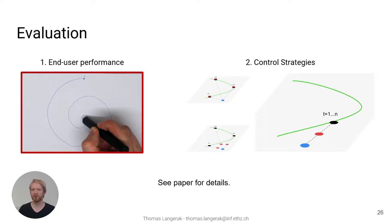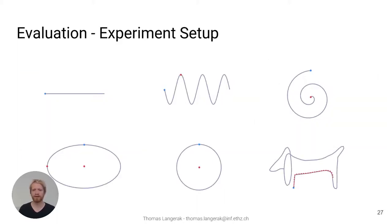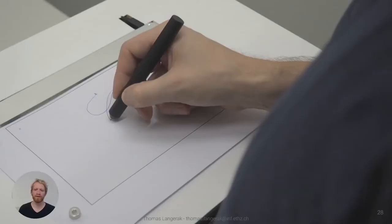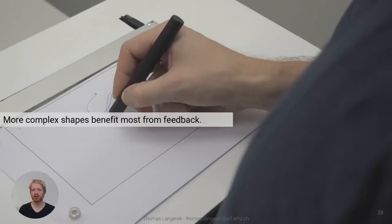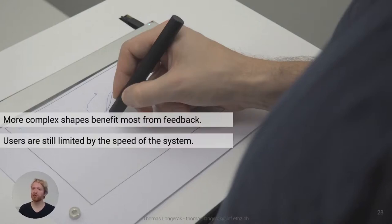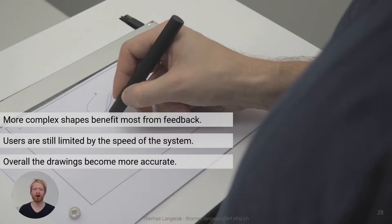Let's discuss the end-user performance in more detail. We asked twelve participants to draw six different shapes with and without haptic feedback. The users received minimal visual support during this task. What we learned from this is that more complex shapes benefit most from haptic feedback. Furthermore, the users are still limited by the physical speed of our system. Finally, the drawings overall become more accurate.